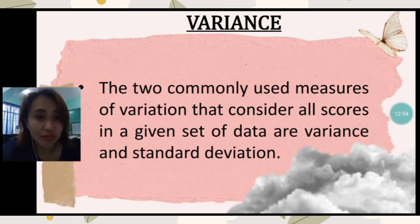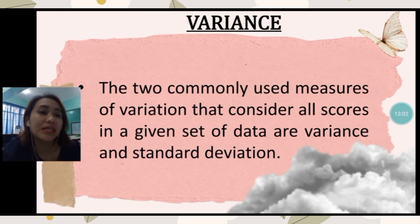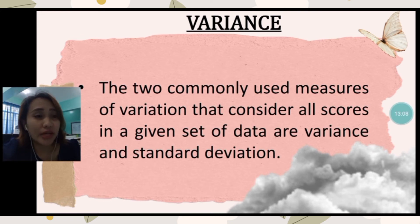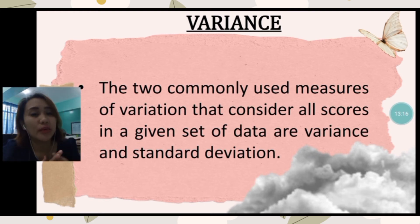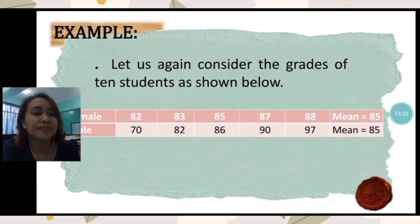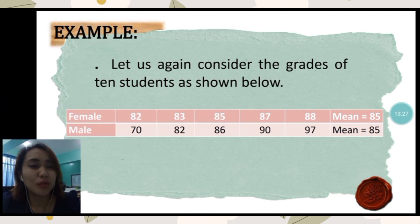The second measure of dispersion is the variance. The two commonly used measures of variation that consider all scores in a given data set are variance and standard deviation. For the range, it doesn't consider all the data since you only subtract the highest and the lowest, whereas in variance and standard deviation all the scores in the data set are taken into consideration. Using the example earlier, let us again use that data to solve for the variance.